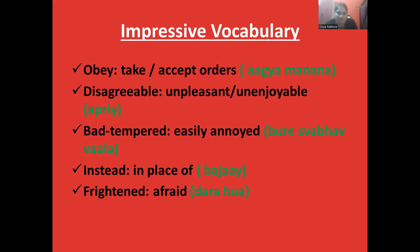Fourth, 'instead' — used in place of something. In daily life when talking to family, colleagues, or friends, we use this word. For example, 'instead of doing this thing, we can do that.' In Hindi, we say 'iske bajae.' Fifth, 'frightened' — the simple meaning is afraid. When we are frightened from someone, we are afraid of something. Every day I will try to give you five new words that we use in day-to-day life.